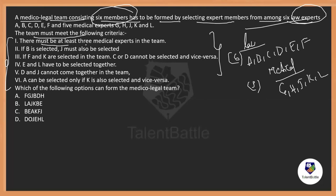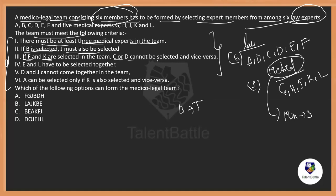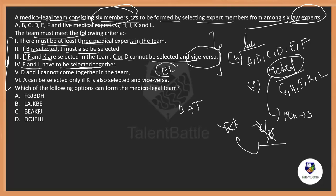The conditions are: there must be at least 3 medical experts in a team; if B is selected, J must also be selected; if F and K are selected, then C and D are not supposed to be selected, and vice versa; E and L have to be selected together; D and J cannot come together in a team; and A cannot be selected unless K is also selected, and vice versa — if A is there, K should also be there, and if K is there, A should also be there. These are the conditions given.